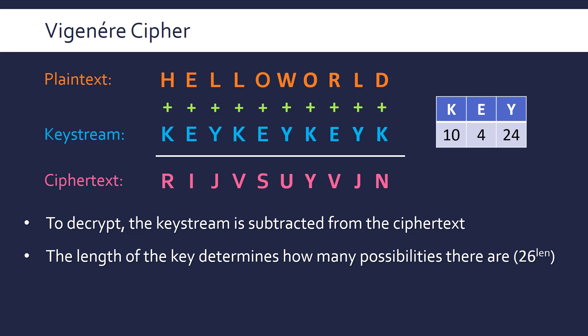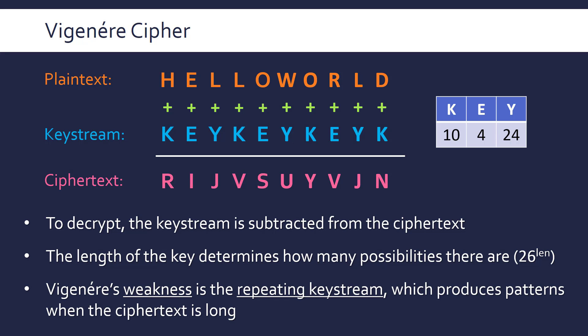The number of possibilities is relevant if you want to break this by brute force. For the Caesar cipher there are only 25 possibilities, so it's very easy to break by brute force. Here it's 26 to the power of however long the key is — in this case 3, so 26³, which is much larger than 25. The longer the key the better, generally. However, there is a key weakness of the Vigenère cipher, and it's all about the repeating key — it's better than Caesar cipher, but having a repeating key stream does lead to patterns.